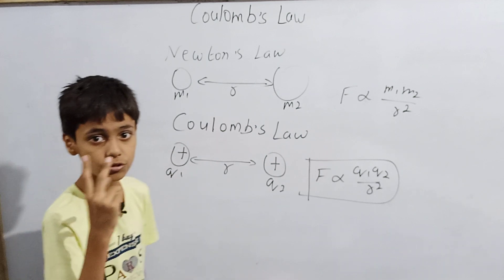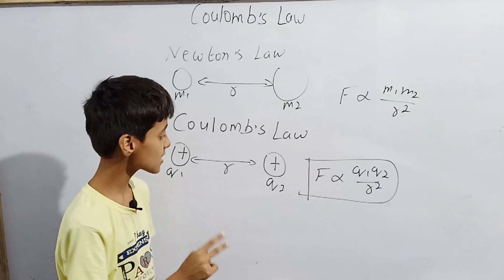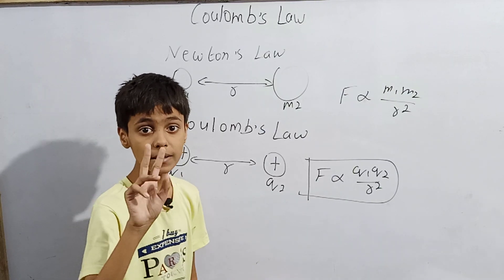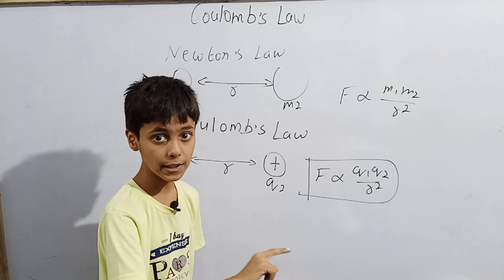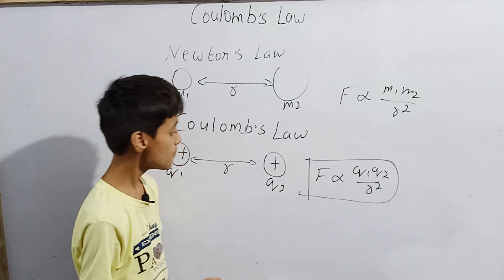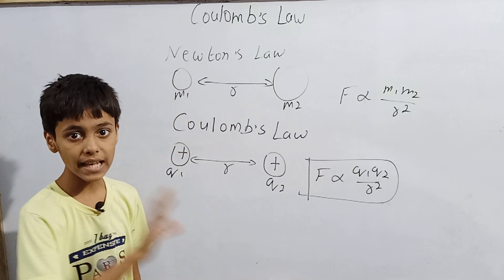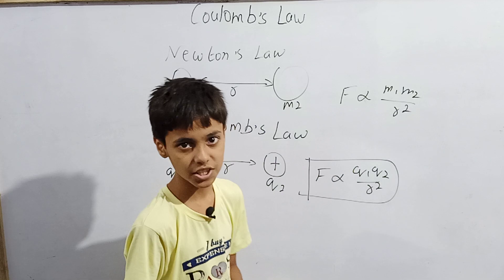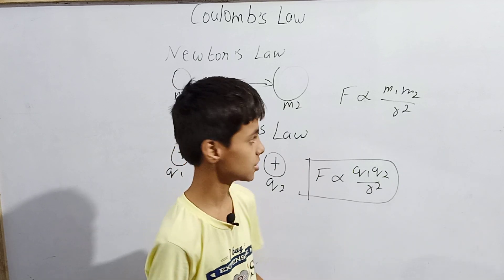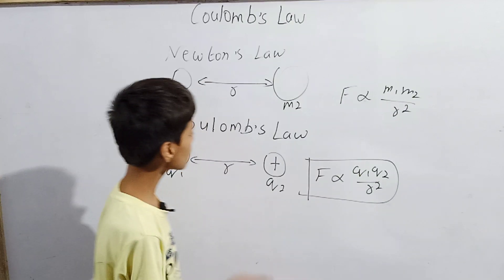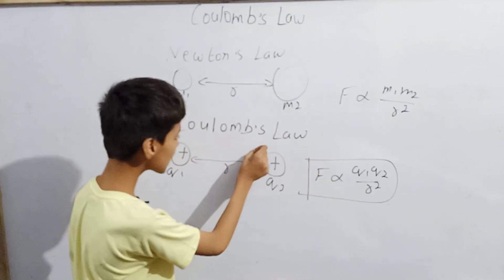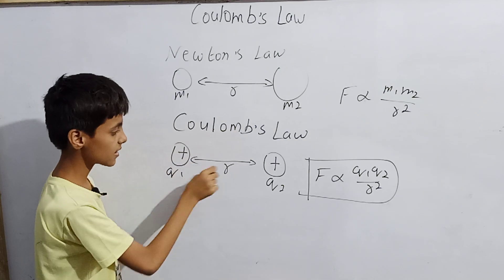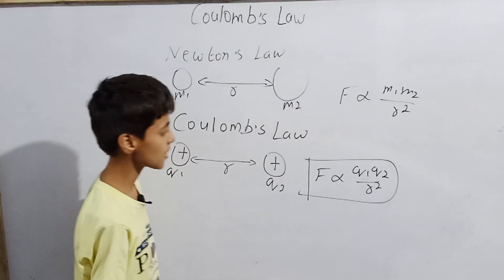If we have two negative charges, the force will be repulsive. But if we have one positive and one negative charge — unlike charges — they attract each other. So Coulomb's Law states: like charges repel each other, and unlike charges attract each other.